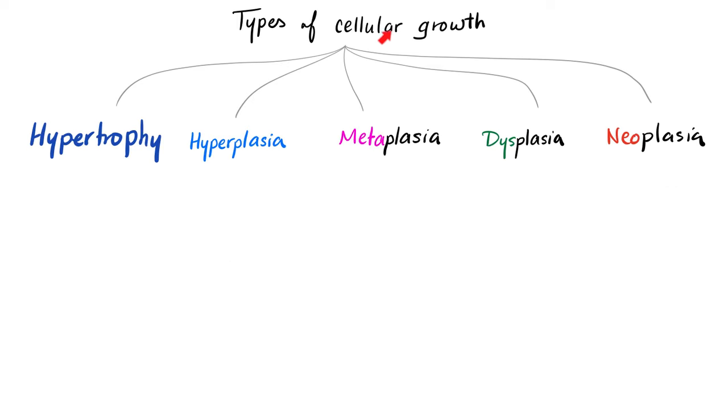So what is cancer? First, we have many types of cell growth. It could be hypertrophy, hyperplasia, metaplasia, dysplasia, neoplasia.